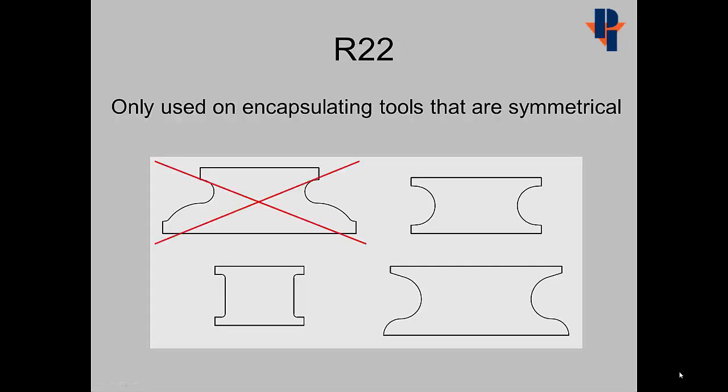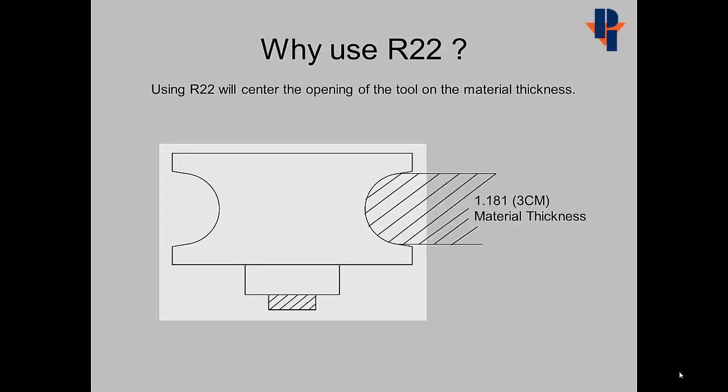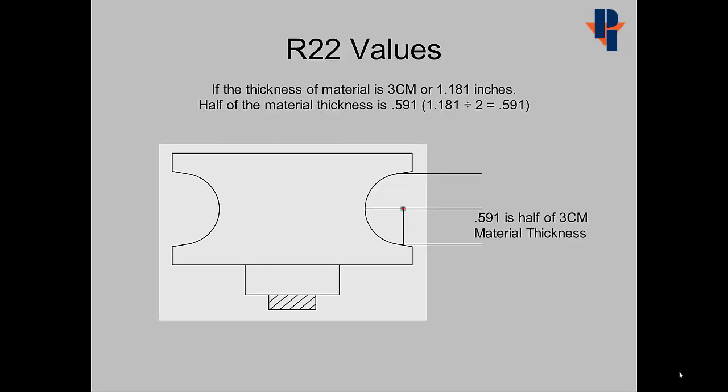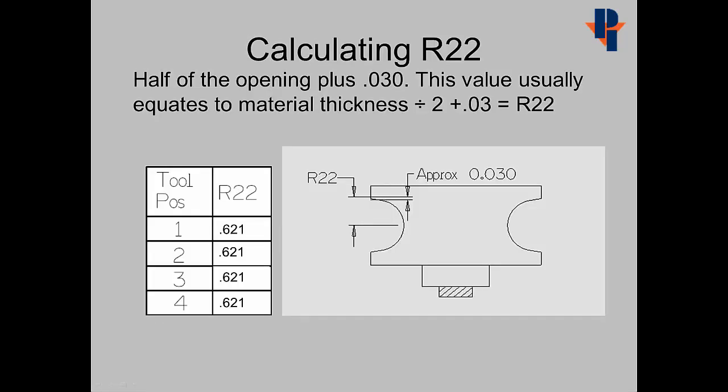R22 is only used on encapsulating tools that are symmetrical. Using R22 will center the opening of the tool on the material thickness. If the thickness of the material is 3 cm or 1.181 inches, half of the material thickness is 0.591. To calculate R22, use half of the opening plus 0.03. This value usually equates to the material thickness divided by 2, which as we learned before was 0.591, plus 0.03 is the value for R22. This value should be the same for all four tools.